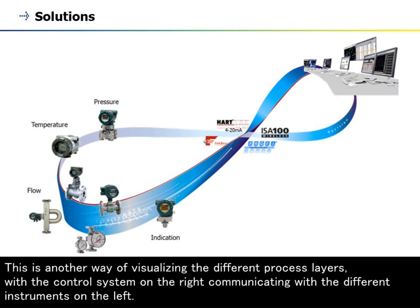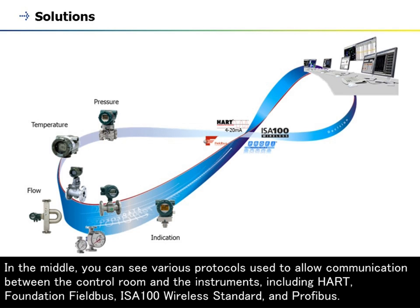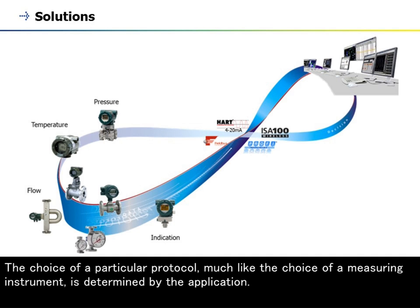This is another way of visualizing the different process layers, with the control system on the right communicating with the different instruments on the left. In the middle, you can see various protocols used to allow communication between the control room and the instruments, including HART, Foundation Fieldbus, ISA 100 Wireless Standard, and Profibus. The choice of a particular protocol, much like the choice of a measuring instrument, is determined by the application.